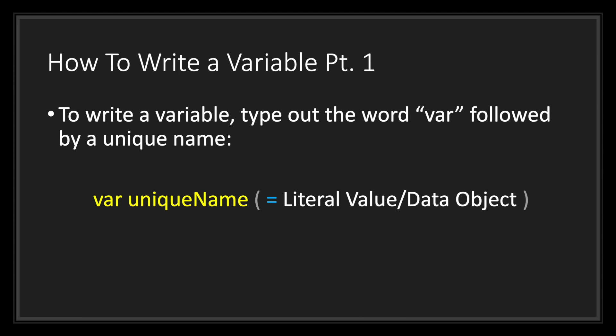This is important because a variable cannot have a name that already exists in your script. To write a variable, you write out the keyword var followed by your unique name — everything in yellow is mandatory. However, everything in the parentheses is completely optional. This means you can create a variable that is empty, or you can assign your variable a literal value or data object using the assignment operator, which is represented by the equal sign symbol.